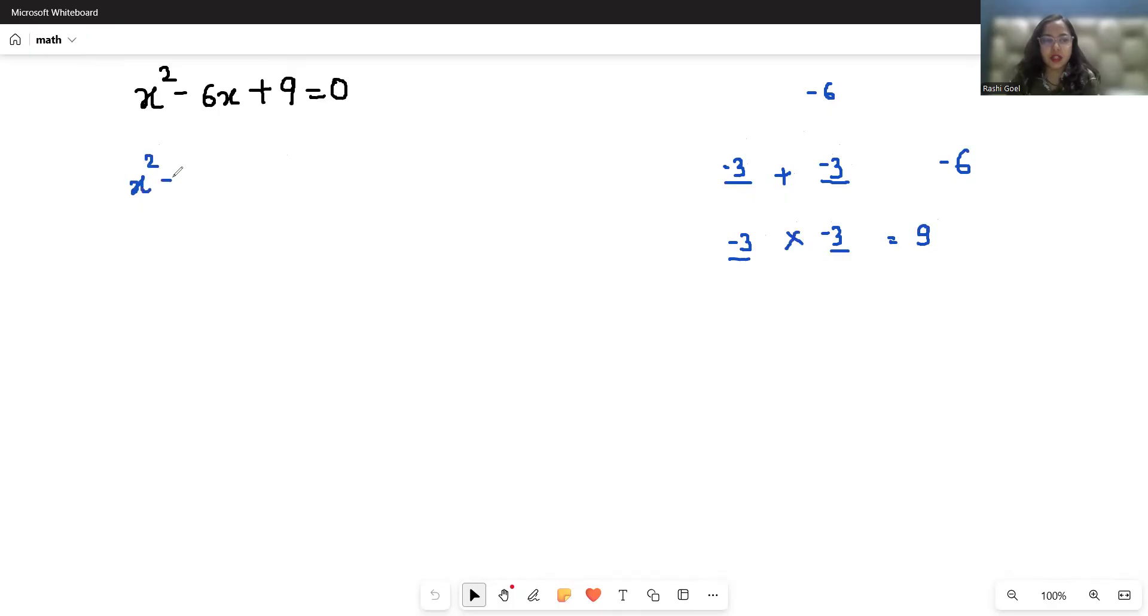So we can write this -6x as -3x - 3x + 9 = 0.